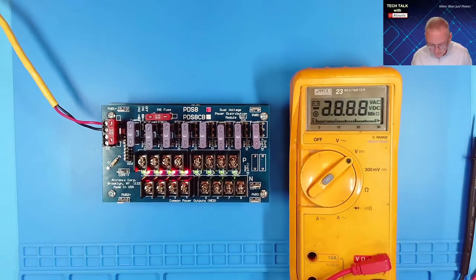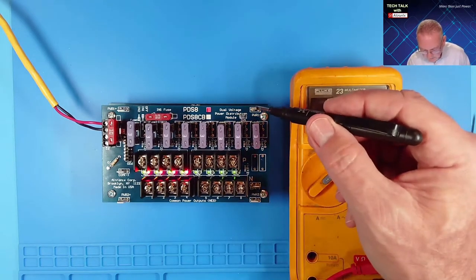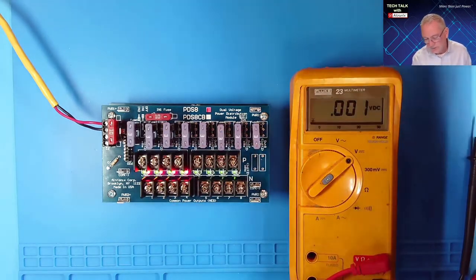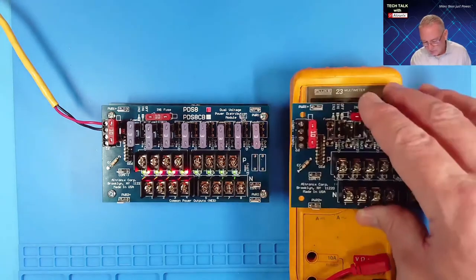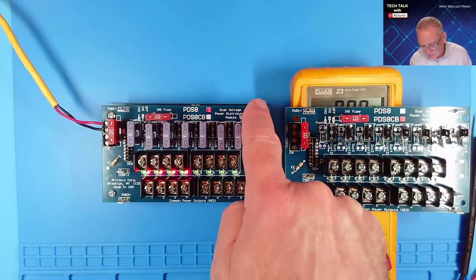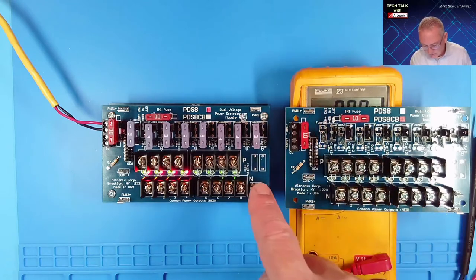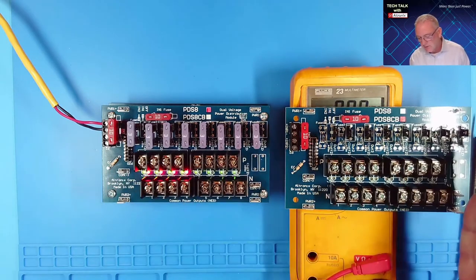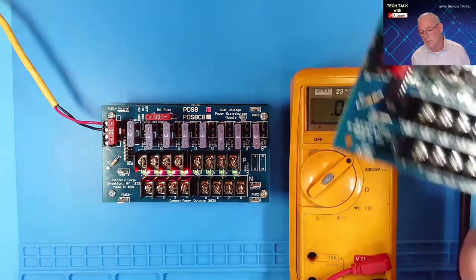So I'll point out a couple things on the board. There are spade lugs on the right and left side of the board. If we need more than eight outputs, we could add a second board by jumpering power one to power one, common to common, and power two to power two, and that would carry the power through to the second PD board.